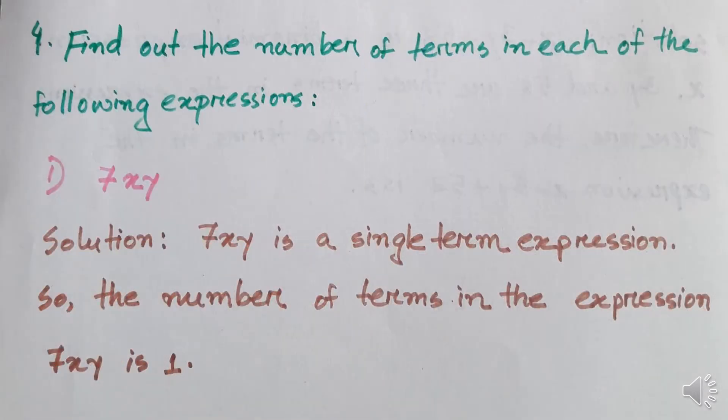Number 4: Find out the number of terms in each of the following expressions. First expression: 7xy. Solution: 7xy is a single term expression. Therefore, the number of terms in the expression 7xy is 1.